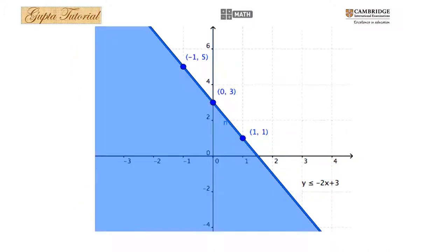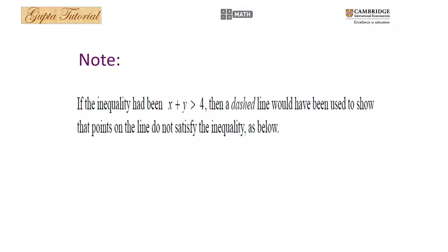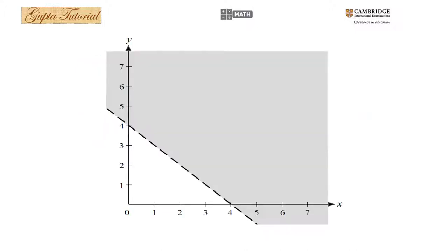Since the inequality was less than or equal to, the blue-colored region is the shaded region you can see. Note that if the inequality had been x + y > 0, a dashed line would have been used to show that the points on the line do not satisfy the inequality, and the shaded region would be to the right or above the line.